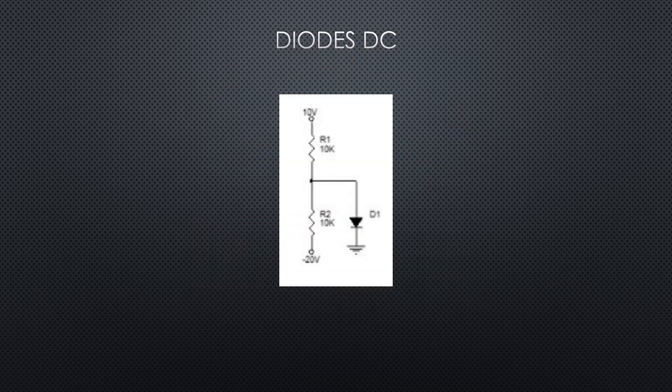Now what about a circuit like this one? Again, like any diode circuit, we need to know what the potential would be if the diode wasn't there at the position from the anode to the cathode. In this case we're going to find V_thevenin for the diode from between the two resistors to ground. Sometimes it's easier for a circuit like this to go ahead and draw in the DC supplies the way they are.